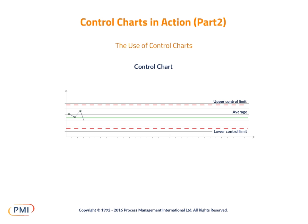Certain patterns of data points give a signal that the variation may be due to an assignable cause, and the process is unstable.